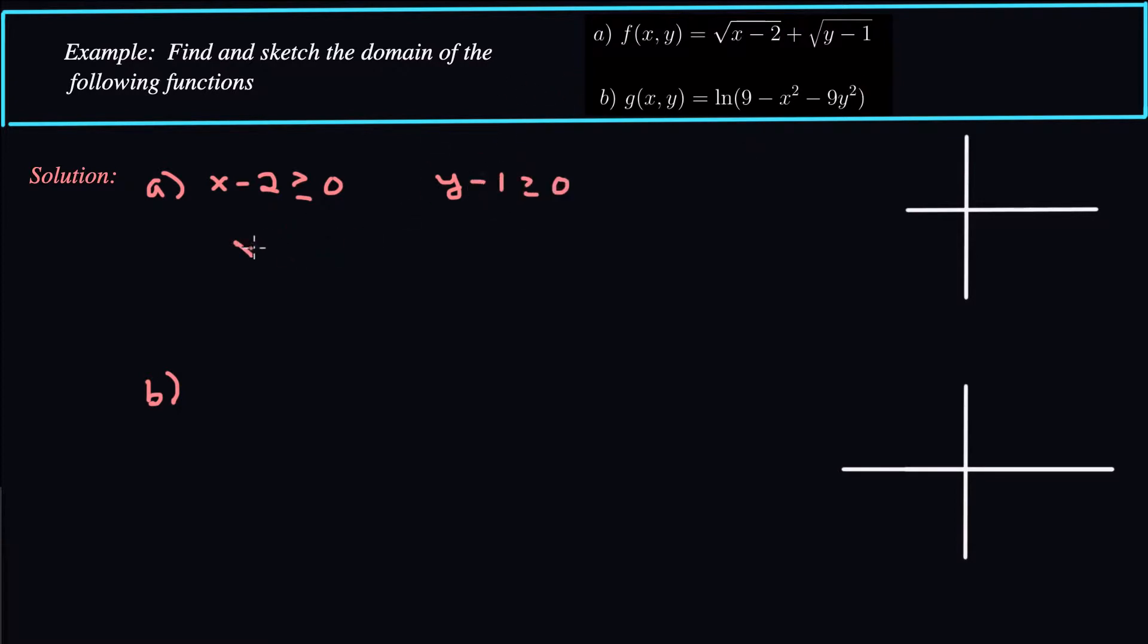Alright, so that tells us that x should be greater than or equal to 2 and y should be greater than or equal to 1. So our domain is going to be the set of all ordered pairs (x,y) such that x is greater than or equal to 2 and y is greater than or equal to 1.